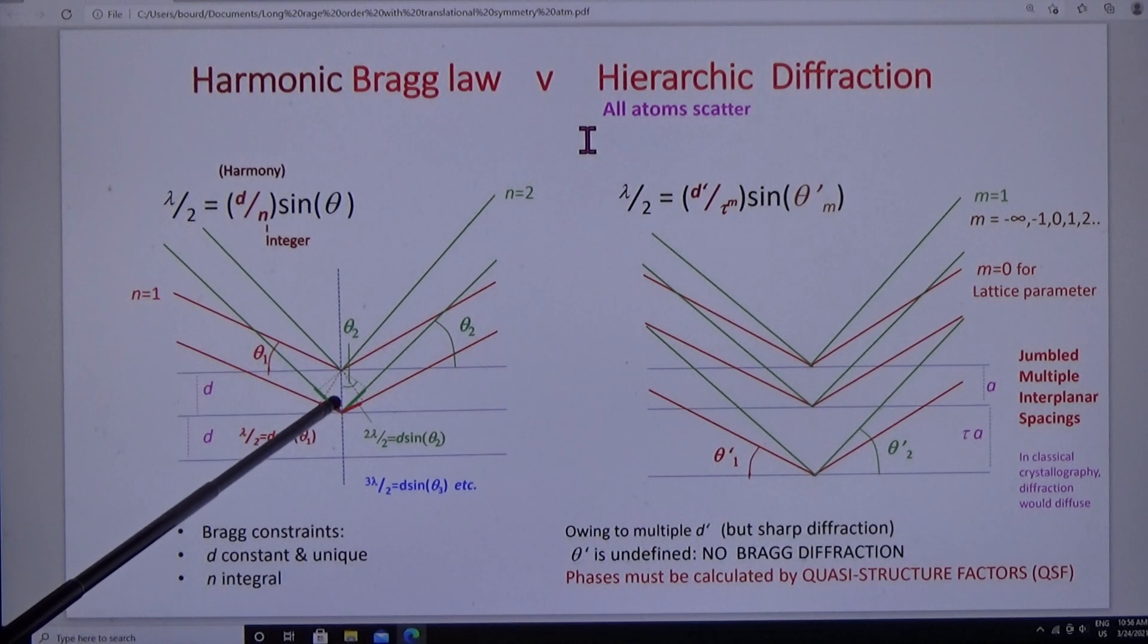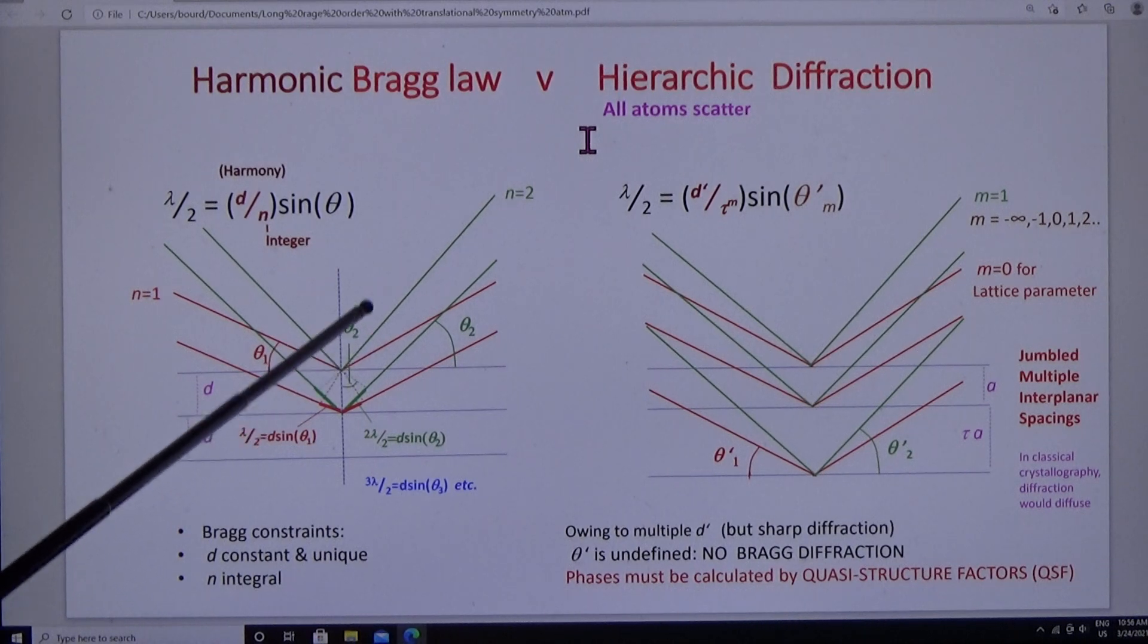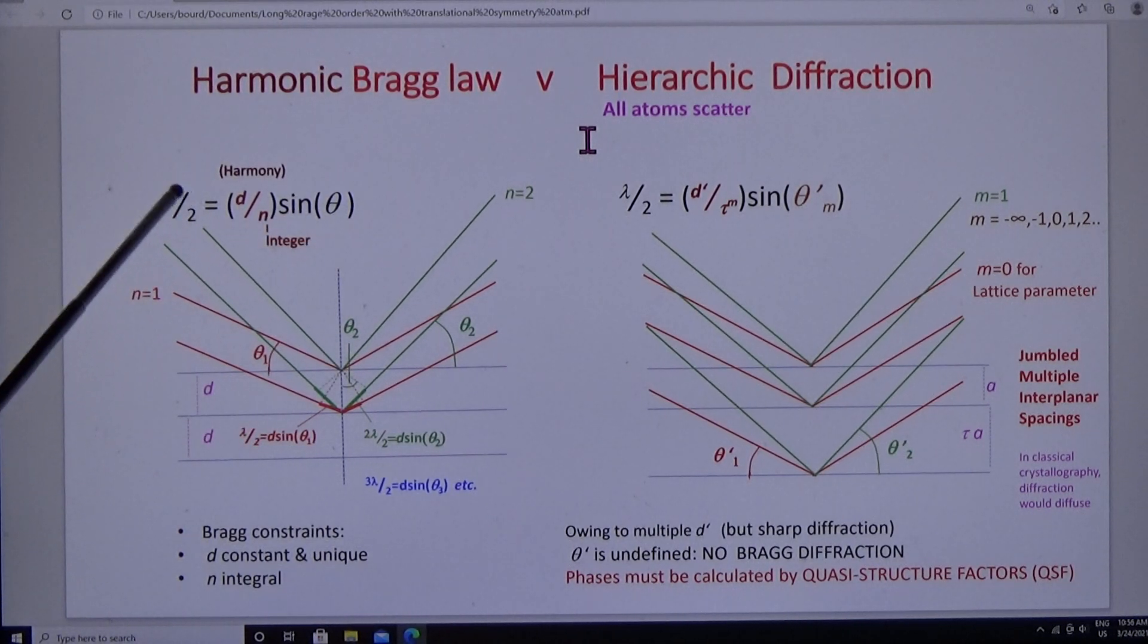And look at the green waves. The difference is two lambda. That's crystal diffraction. That's Bragg diffraction.